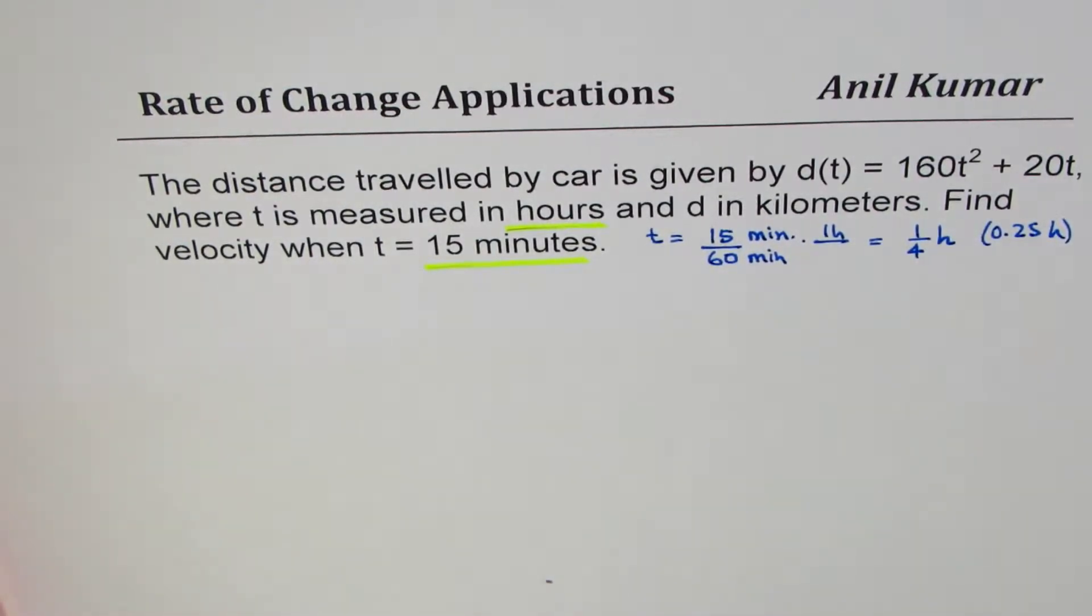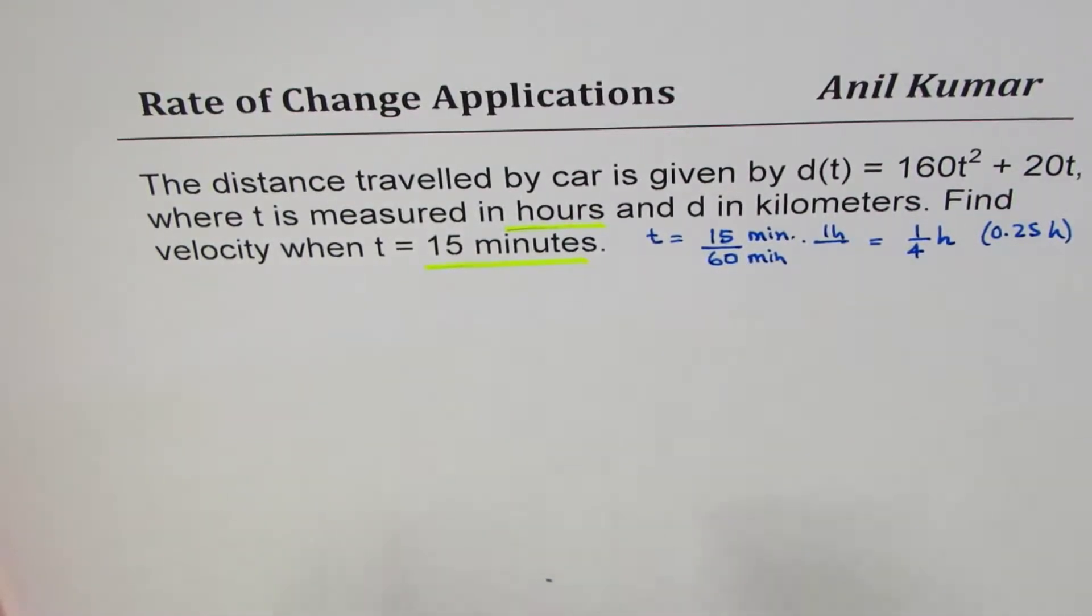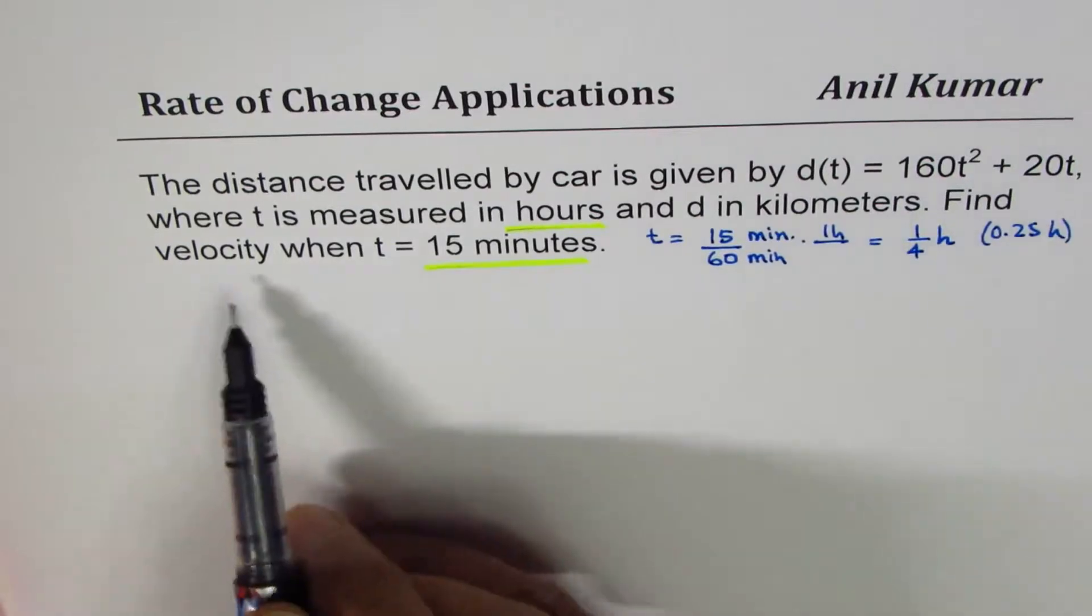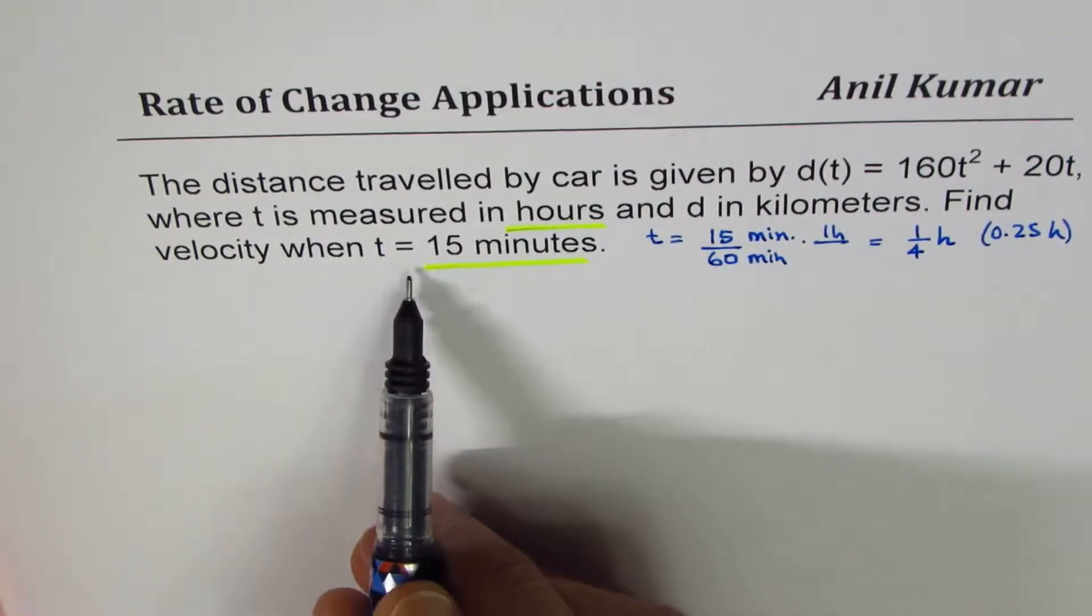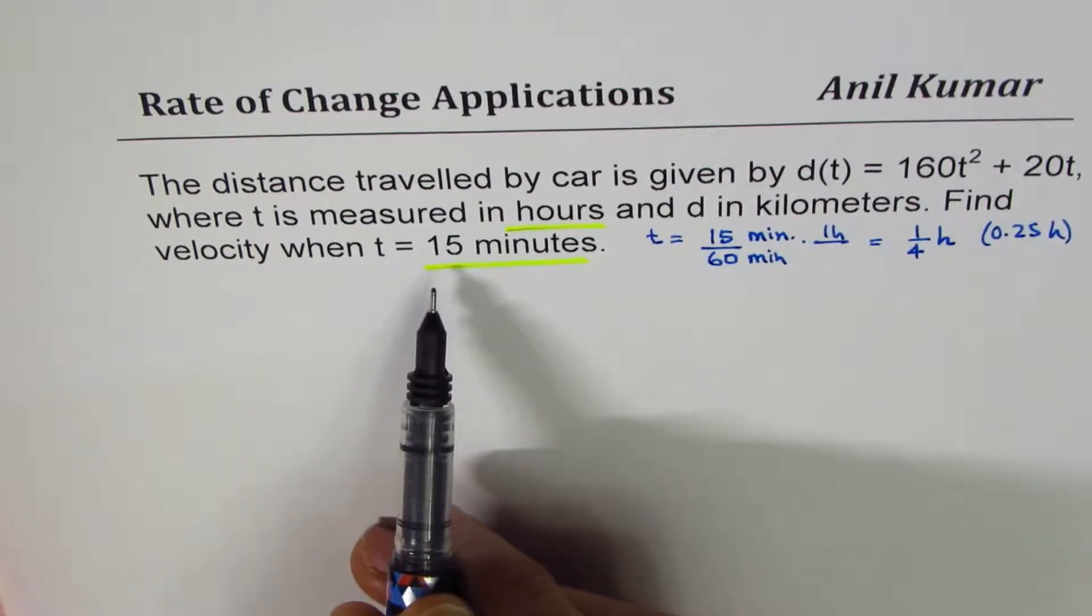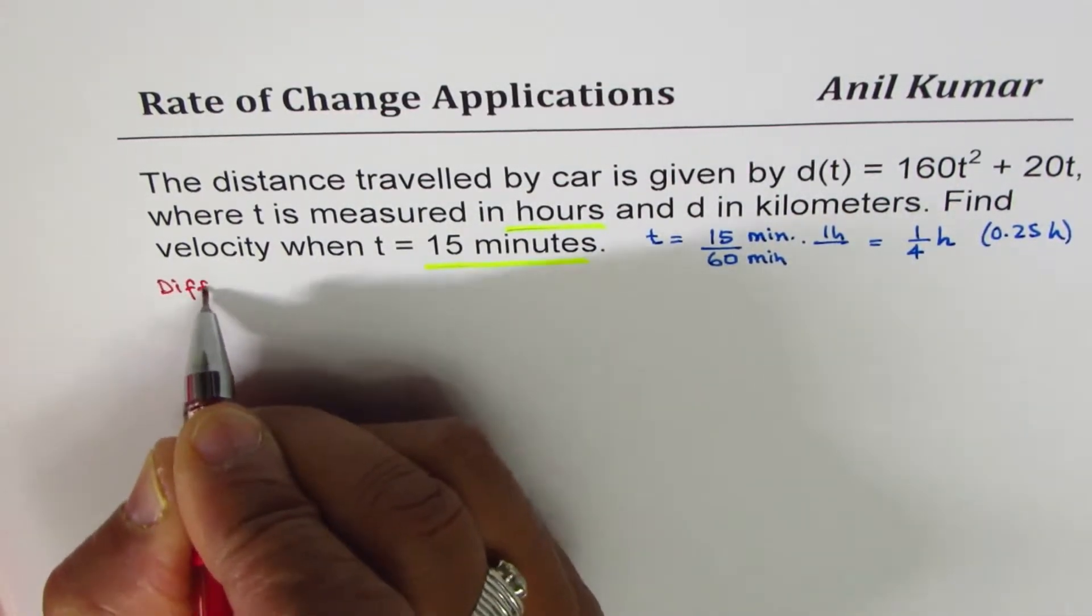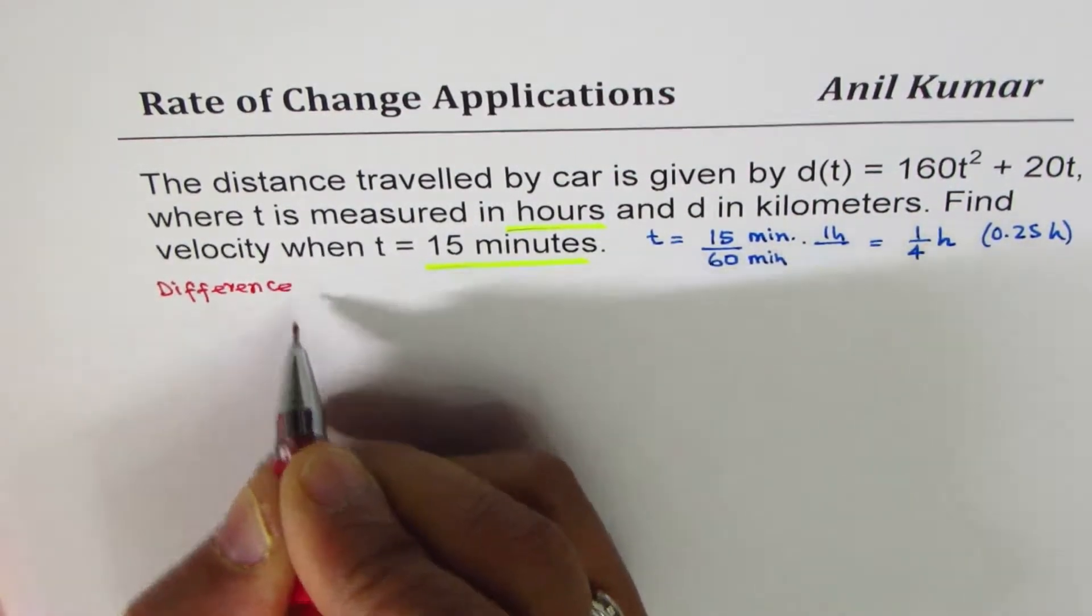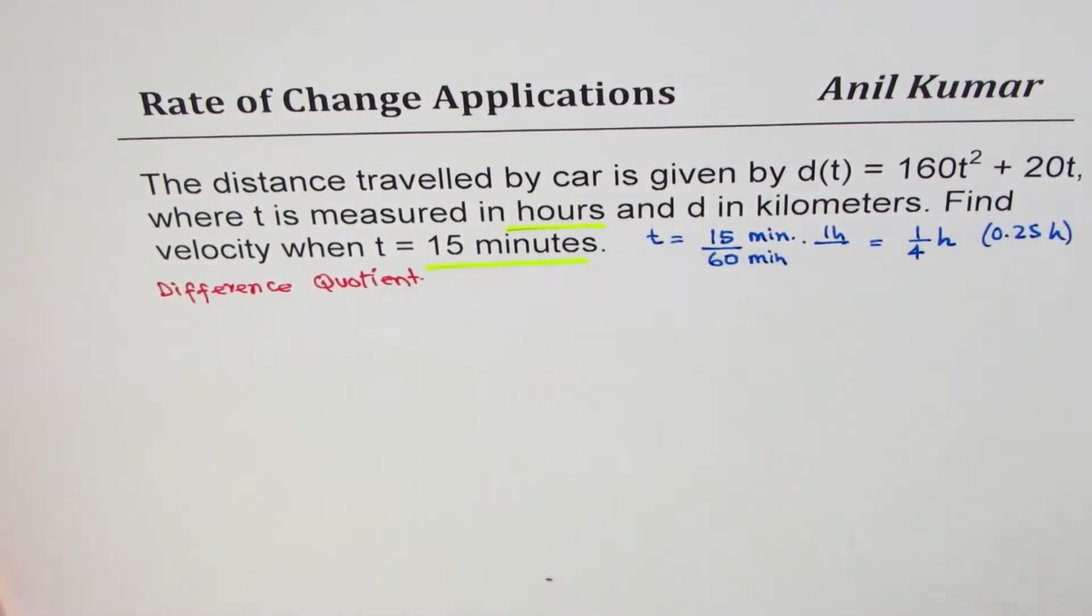Now let's find velocity at t equals to this. So instead of finding velocity at a particular time I will write a general solution here. We call this method as difference quotient method. So it's a general method, what substitute time later.